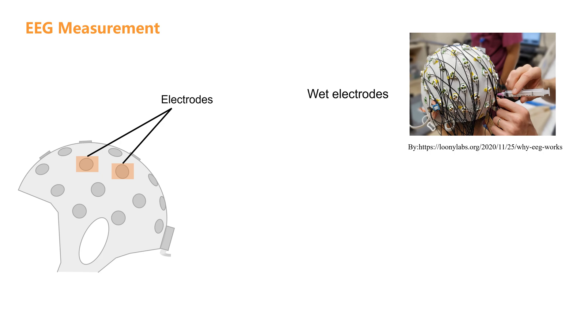These electrodes use conductive gel or saline solution to reduce impedance between the electrode and the skin, thereby improving signal quality. While wet electrodes provide excellent data quality, they can be a bit inconvenient to use.